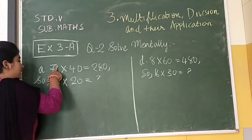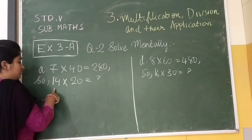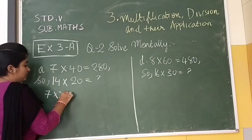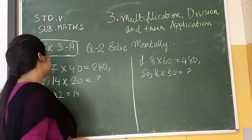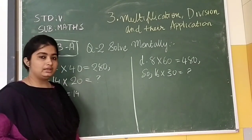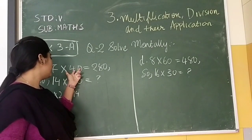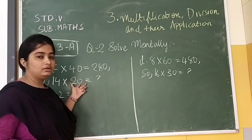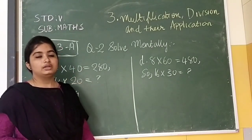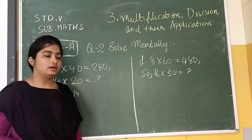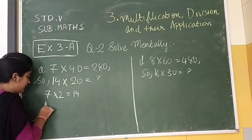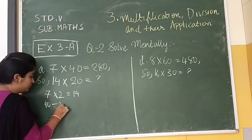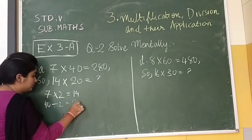See here, we have 7 and here we have 14. You know that 7 into 2 is 14, so 14 is a multiple of 7. And here we can see that if we do 40 divided by 2, we can get 20.